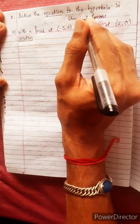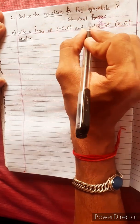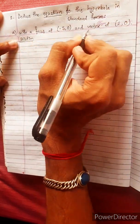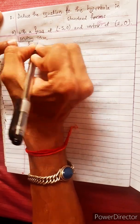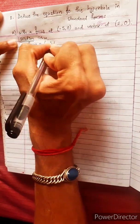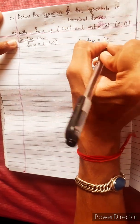This is the equation of hyperbola in standard form. Focus and vertex is given. Focus equals minus 5, 0. Vertex equals 2, 0.